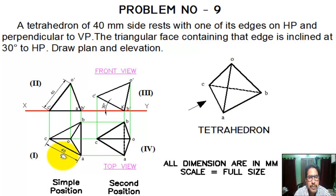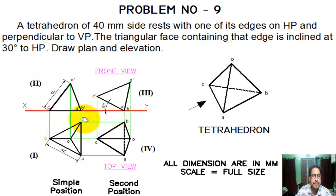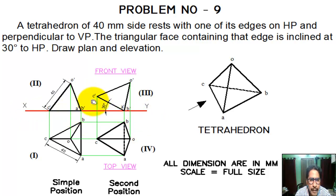First we draw in normal position. In simple position, we see C from the front for the front view, and C from the top for the top view. Above the XY line is the VP vertical plane; below the XY line is the horizontal plane. First, we draw the top view. We draw a line AB perpendicular to the XY line — perpendicular to VP — with dimension 40mm.